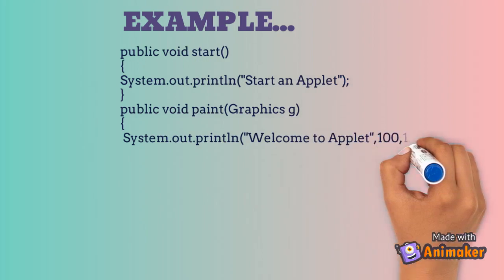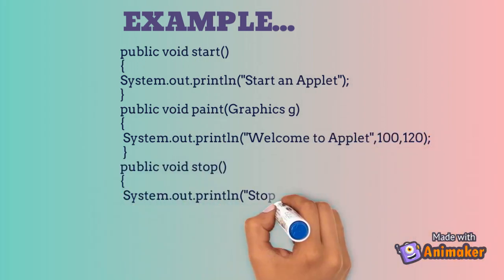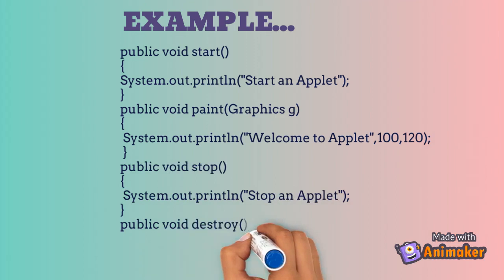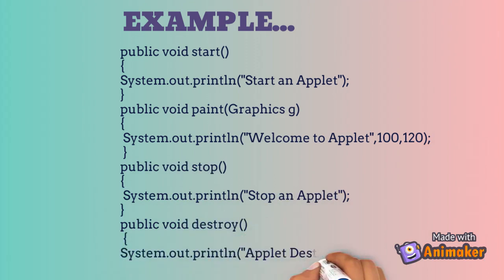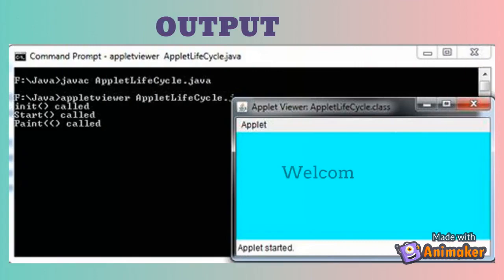The x value is 100 and the y value is 100 for the message position. Stop method is called when Applet is stopped. When the Applet window is closed, the destroy method is called. You can see the output here — a welcome Applet message is shown in the Applet window. When the browser is minimized or maximized, it shows messages in the console or command prompt window.